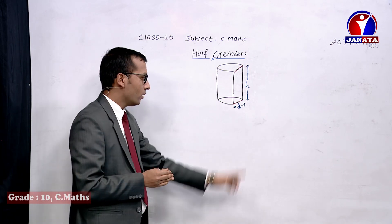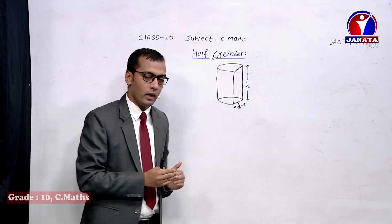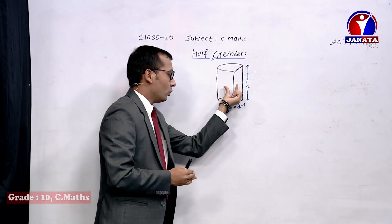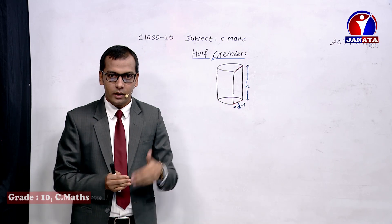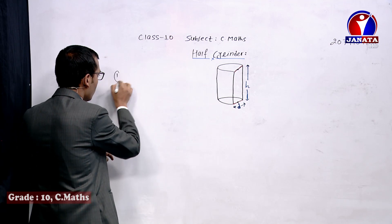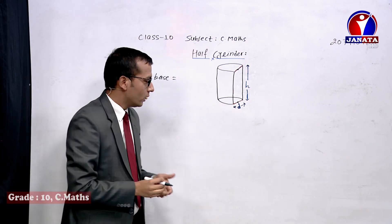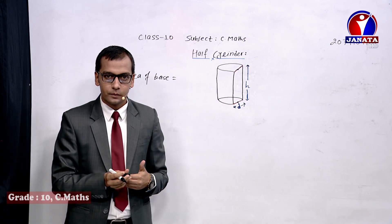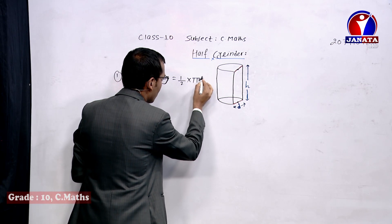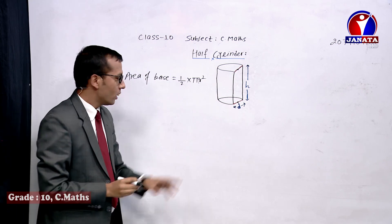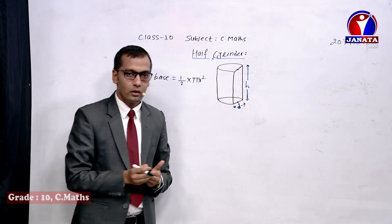So there are three different surfaces in a half cylinder: the rectangular flat surface in the front, the curved surface at the back, and the semi-circular faces at the base and top. Now, the area of the base of this half cylinder — since the base is a semi-circle — is one half of πr², so the area of base equals πr²/2.